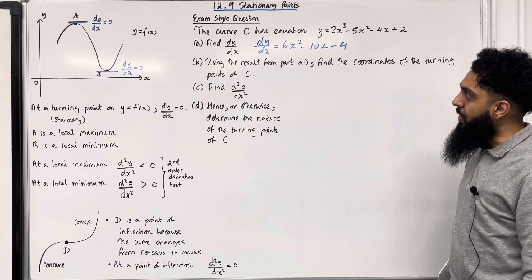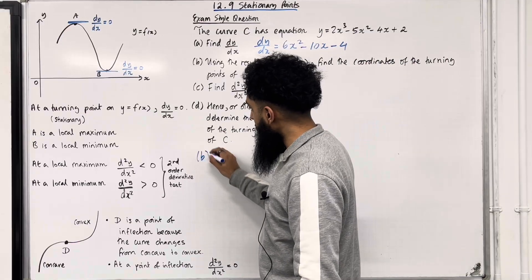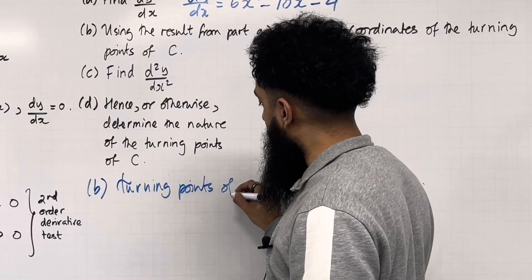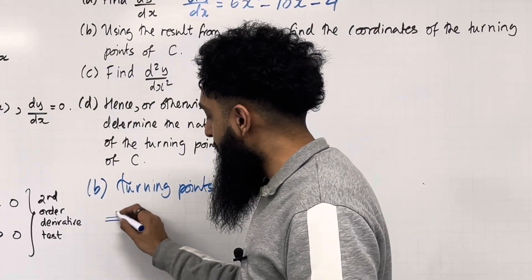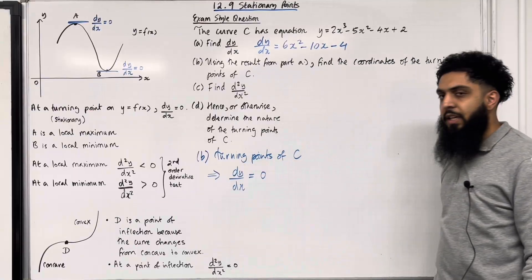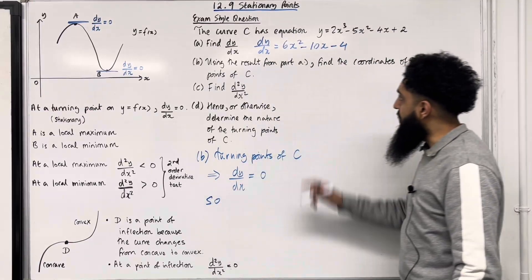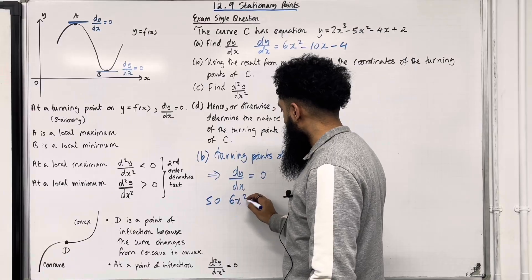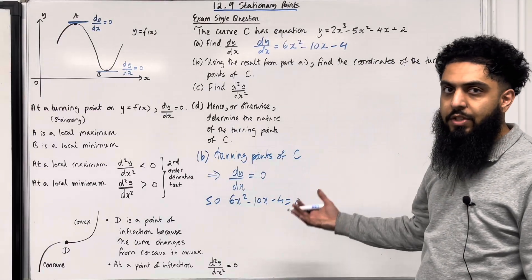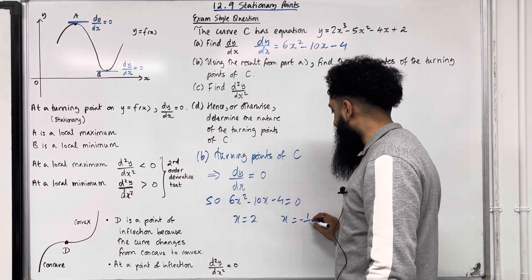Let's have a look at Part B. Using the result from Part A, find the coordinates of the turning points of C. To find the turning points we solve dy/dx = 0, because at turning points the gradient is 0. Setting 6x² − 10x − 4 = 0 and solving gives x = 2 and x = −1/3.